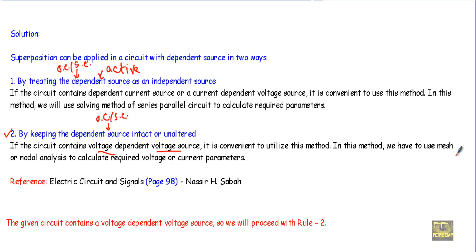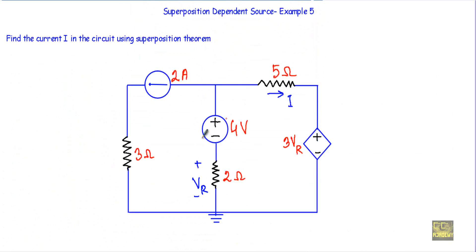In this method we have to calculate the required voltage or current parameter. This is my reference: Electric Circuit and Signals, page number 98. So I will proceed with rule number 2. First, I will keep this 4 volt independent voltage source active. Since I am not treating the dependent source as an independent one, I will not replace this voltage source with a short circuit. Rather, I will replace the current source with an open circuit.